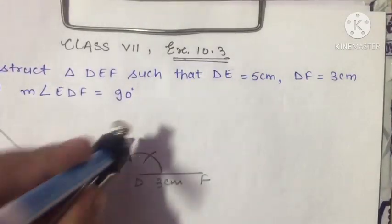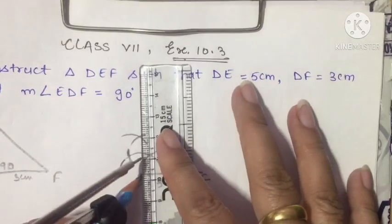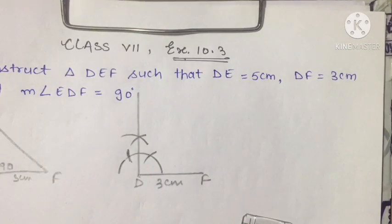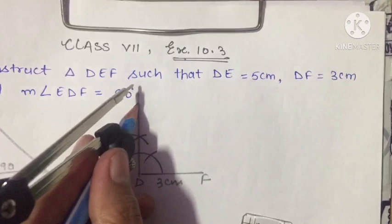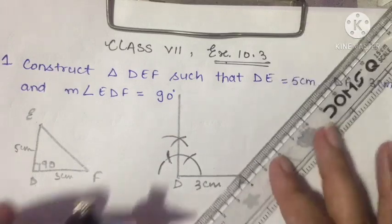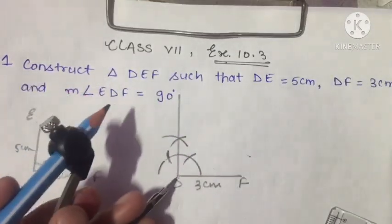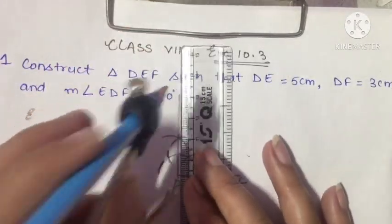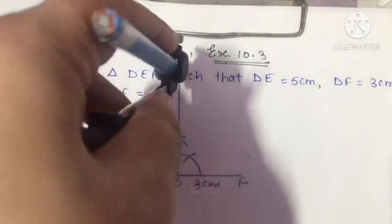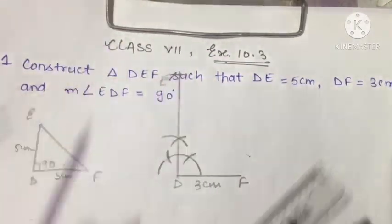One arc will be at 120 degrees and the second arc at 60 degrees, giving an angle of 90 degrees. This angle at D will be 90 degrees. Then DE will be 5 cm along that ray, giving us point E. So this point will be our E, and F is already marked.